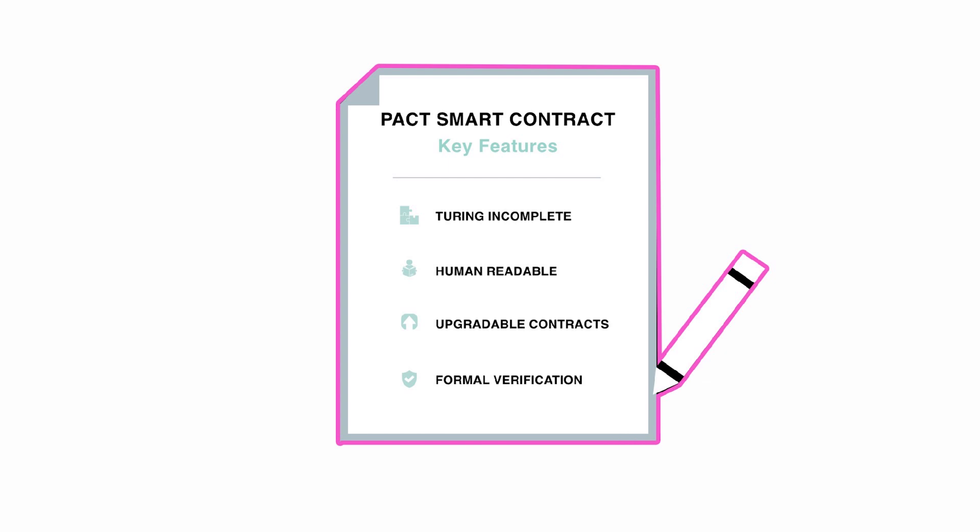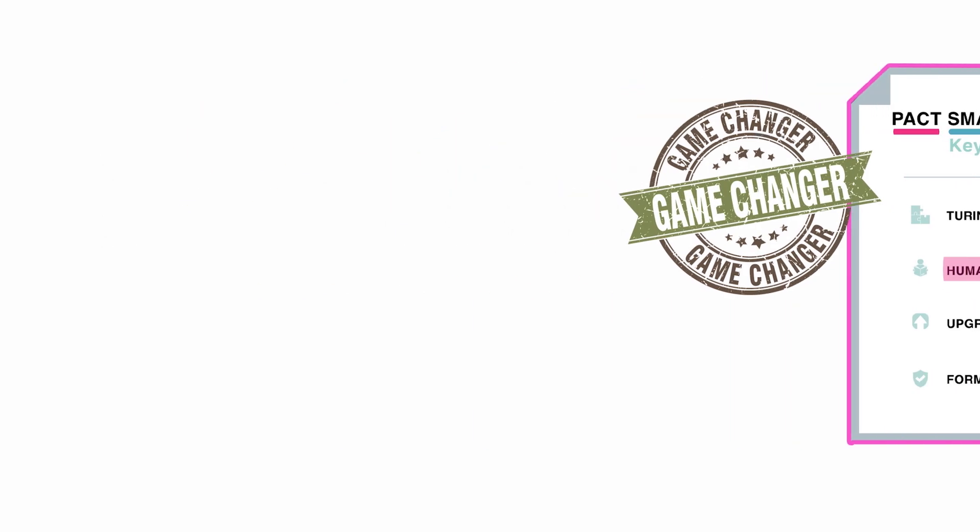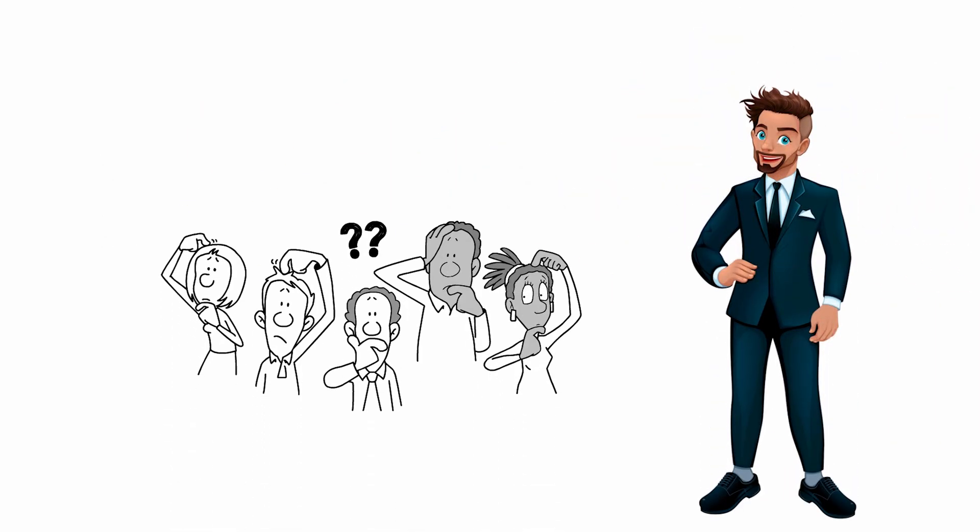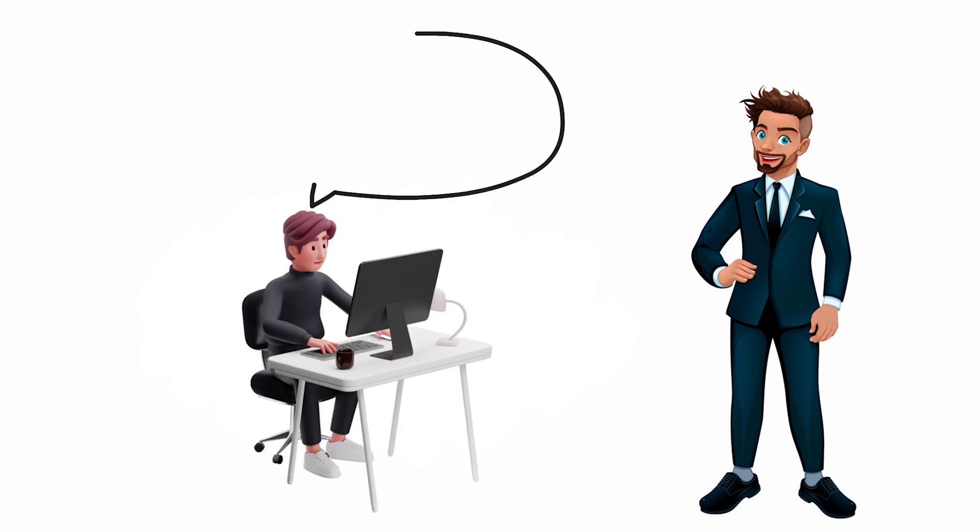The next cool feature that makes Pact so much more superior than other smart contract coding languages is the fact that Pact is written in human readable code. This means that after your smart contract executes, you still have the ability to read the code. That is a complete game changer, guys. Now I know that this next part is going to be above your head, but in order for you to understand what I'm trying to explain, I need you to be able to visualize the difference between Pact and Solidity.